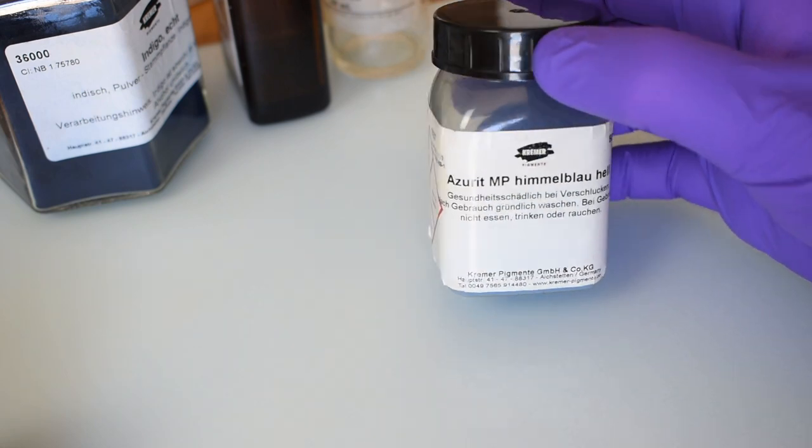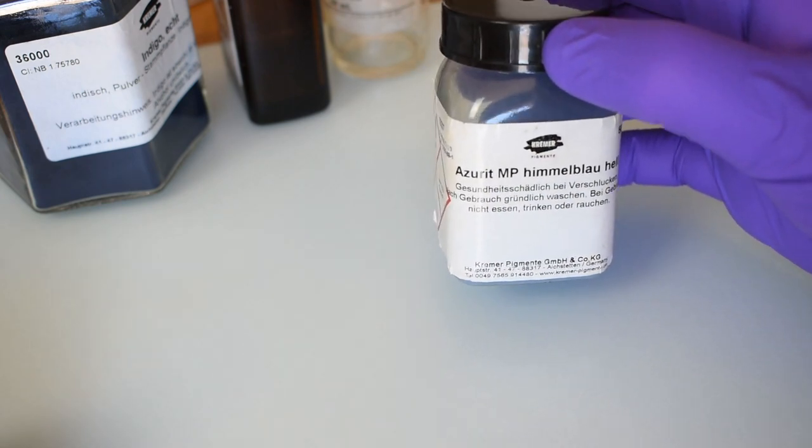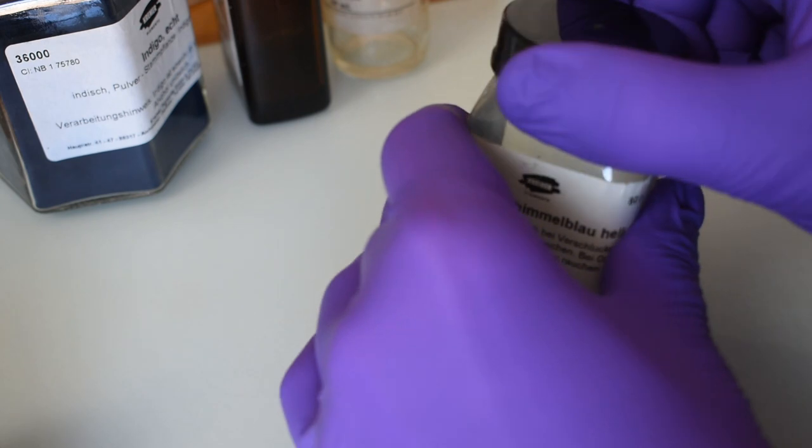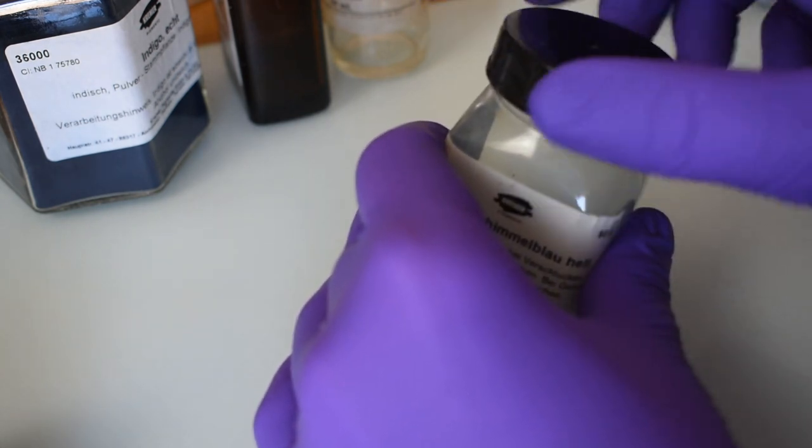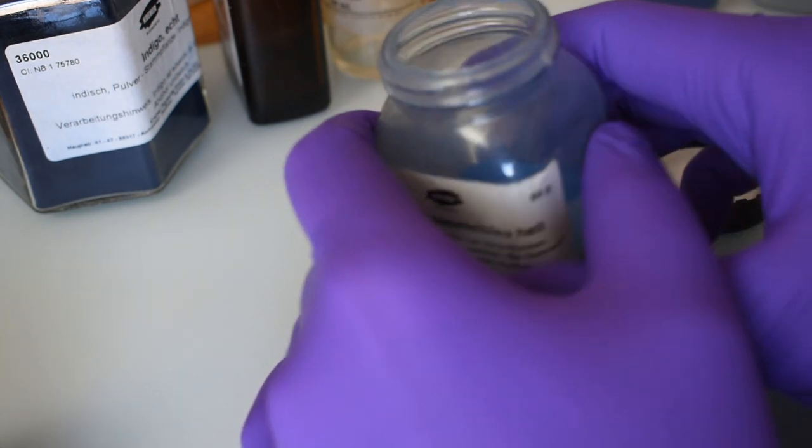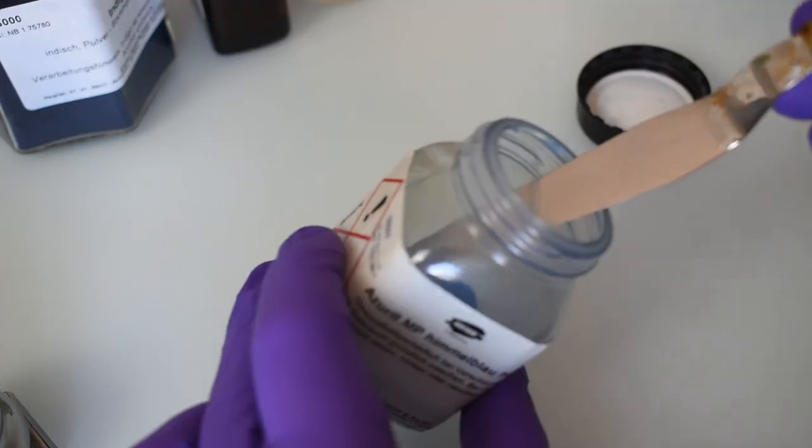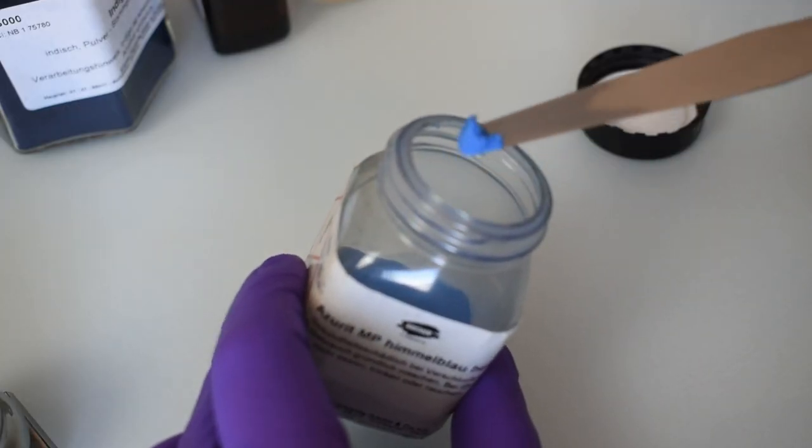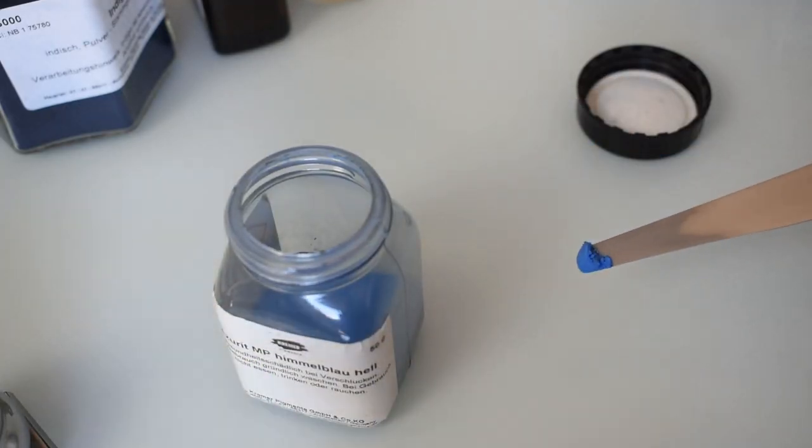In this video I will show how I make azurite oil paint from powdered azurite pigment. Azurite is a natural basic copper carbonate. It has a unique azure blue color which resembles a cloudless sky. When correctly prepared, azurite is one of the most permanent pigments in the world.